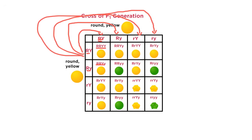You end up with 16 outcomes total. In a test, you won't have time to draw round or wrinkled seeds — you'll need to work with the letter notation only. To identify all similar outcomes, use a highlighter or colored pencil to group the ones that are the same. This is the phenotypic ratio — the physical ratio — and it's a golden ratio you must know off by heart.